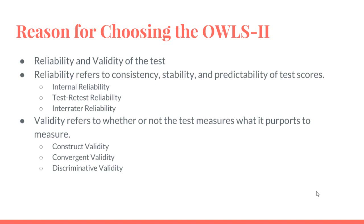Test-retest reliability refers to the stability of test scores over time, and test scores are not expected to change over time. The OWLS-2 test-retest interval was two weeks. For both forms A and B of each section, the two-week test-retest correlations range from 0.73 to 0.95, with a median of 0.85.